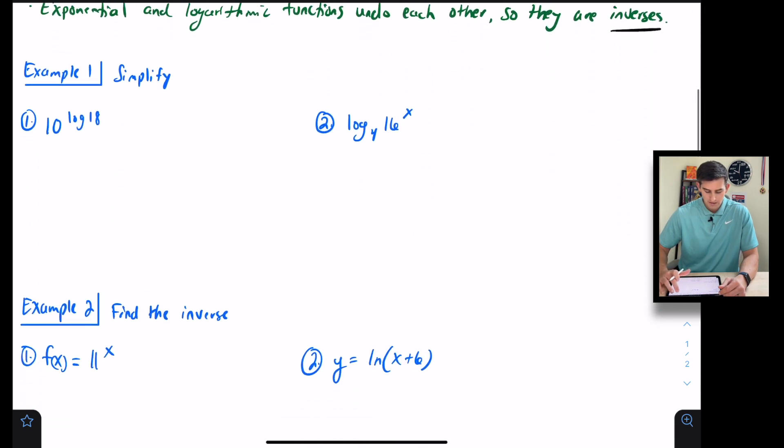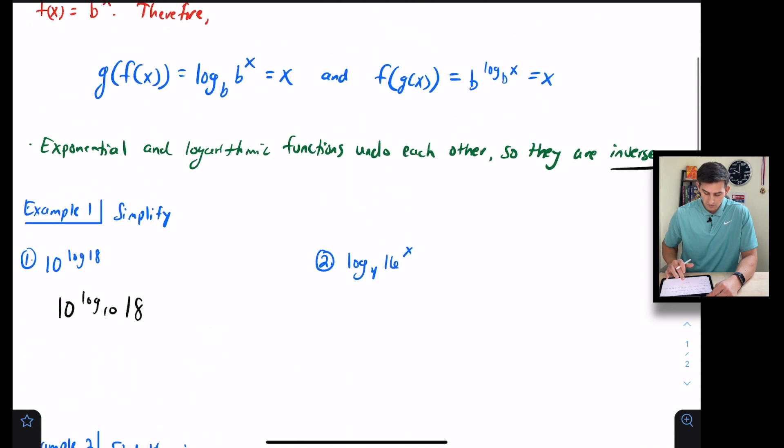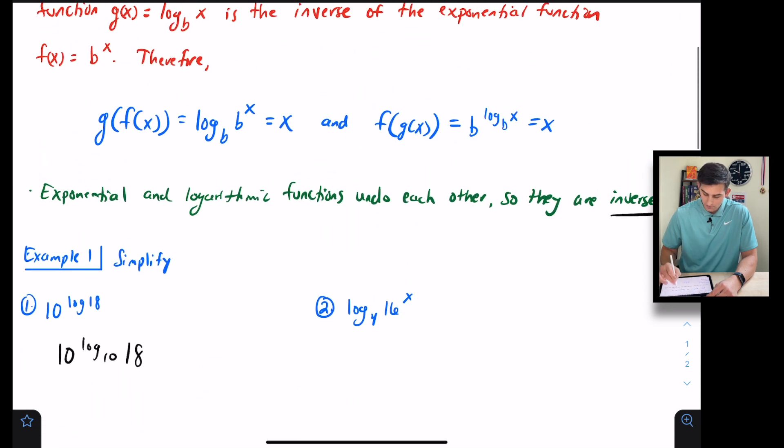Let's look at a couple examples. First we're going to simplify 10 to the log of 18. We can write this as 10 to the log base 10 of 18—that's our common log. We have 10 and log base 10 of 18, so this is going to cancel and we would be left with just 18 as our solution.